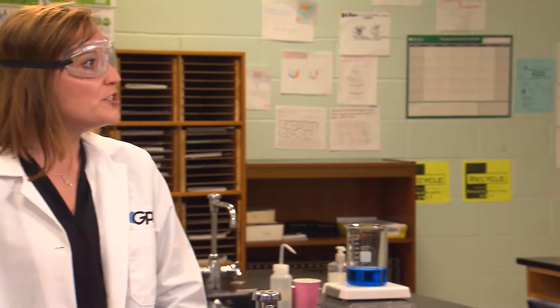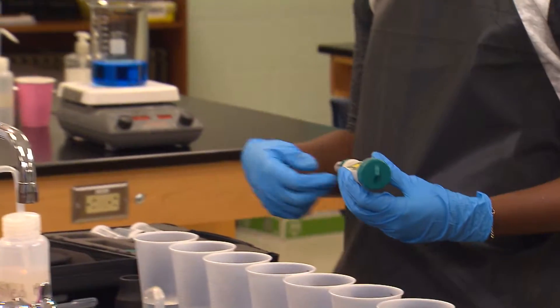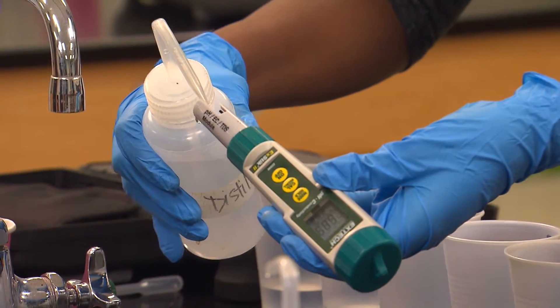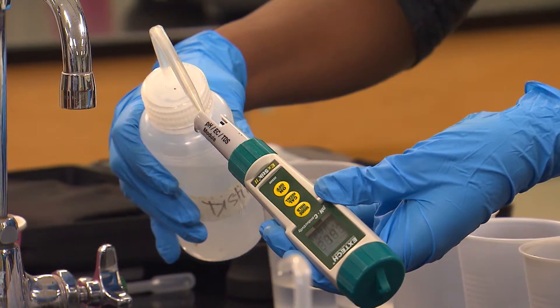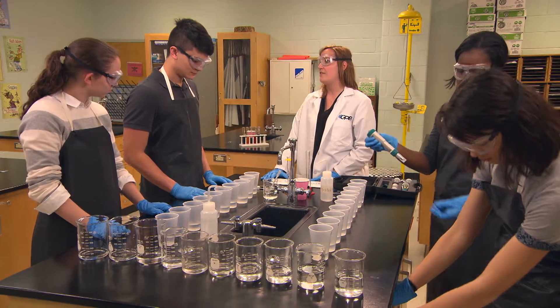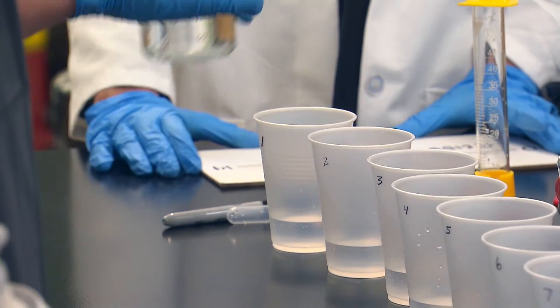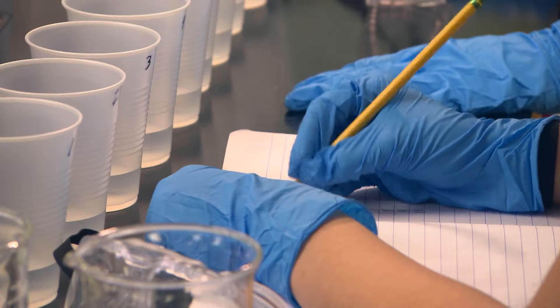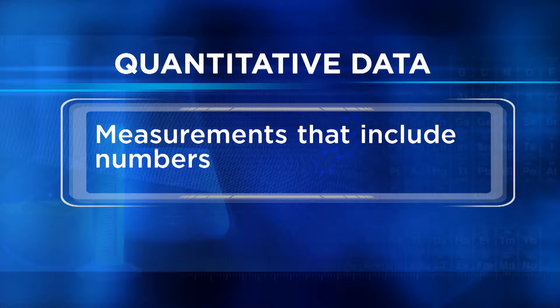Now you're ready to use the pH probe or pH indicator to test for the presence of acids. Team one, please turn on your pH probe and rinse the tip with distilled water, and dip the tip in water sample one until you see the pH of the solution appear on screen. Then record the pH level in your lab book. Team two, please use the pH indicator and add five drops to each water sample; record any observed color changes. Notice that team one is recording pH numbers — since they'll have numerical data, their measurements are called quantitative.